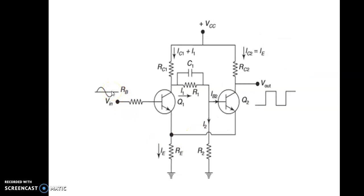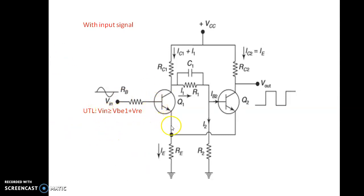Now let us assume that an input voltage is applied to this circuit and see how transistors Q1 and Q2 convert this sinusoidal input into a square waveform. When the input voltage increases above 0, nothing will happen until it crosses the upper trigger level. The upper trigger level means when VIN is greater than VBE1 plus VRE. As the input voltage increases above this level (UTL), transistor Q1 turns on.